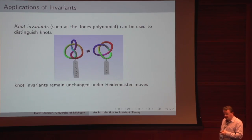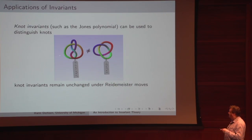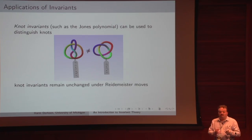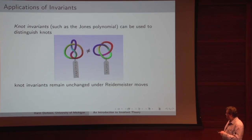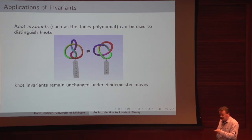You can use knot invariants to distinguish knots in some cases. For example, if you evaluate the Jones polynomial on one knot and get some value, and evaluate it on another and get a different value, this shows the knots are not equivalent. The Jones polynomial stays the same under all Reidemeister moves — the allowable operations to go from one knot to another. So there are many examples of invariants.